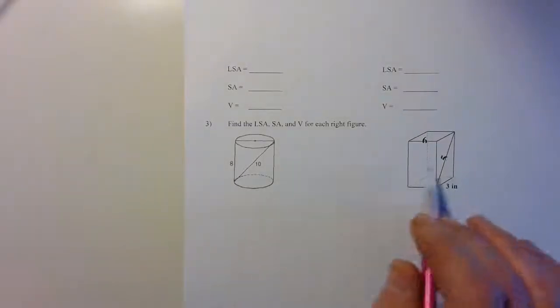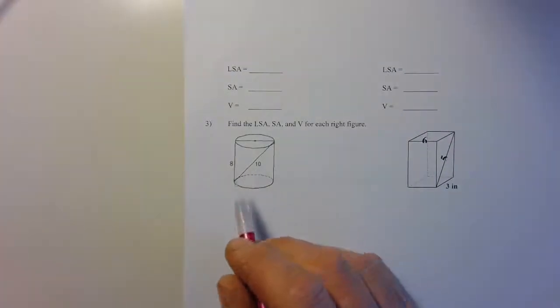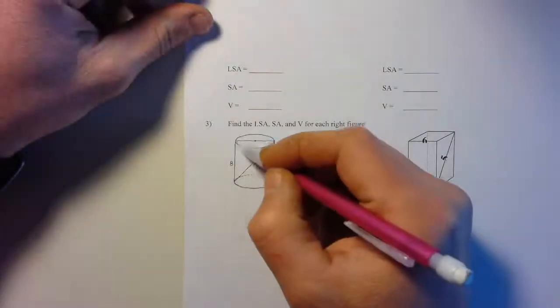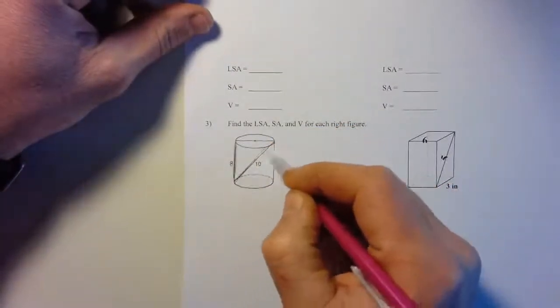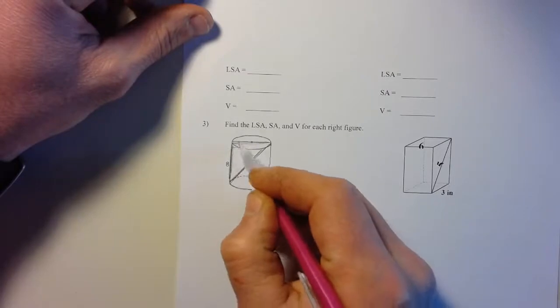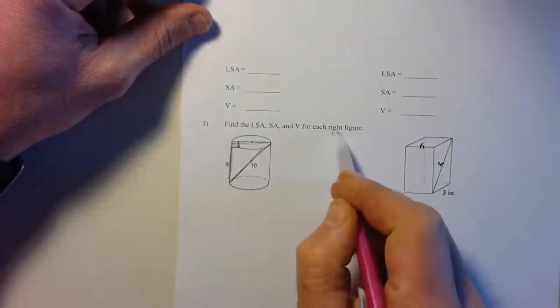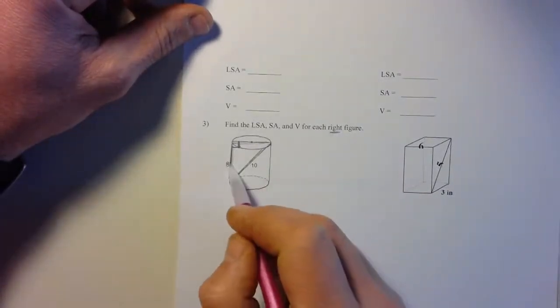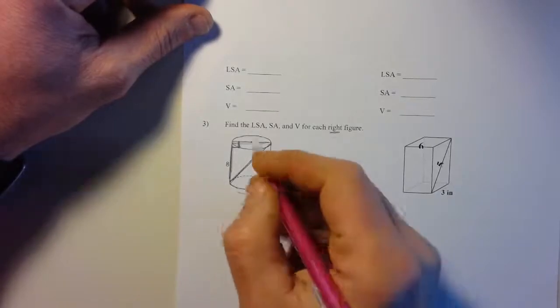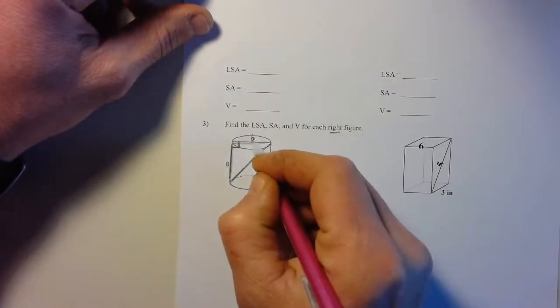It says it's a right figure so that has to be a right angle. If I look at that triangle, that's a 6-8-10, so I know the diameter there. Once I have that diameter, I can get the rest.